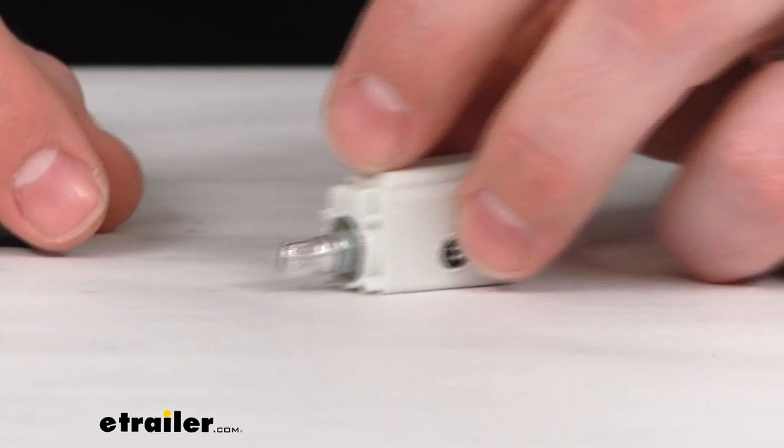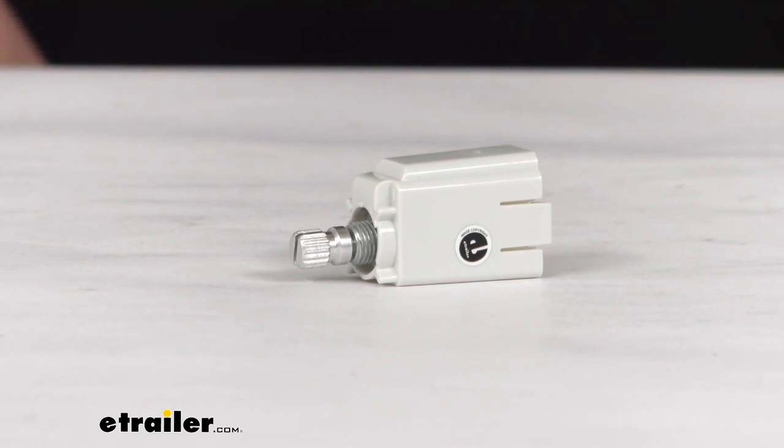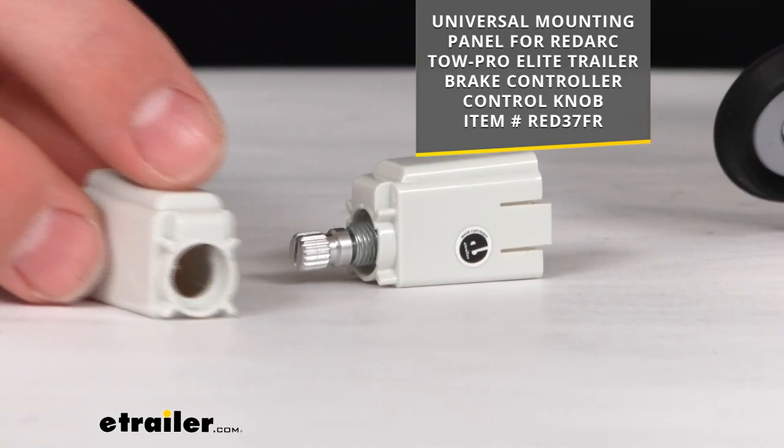The front dial will still attach the same. Everything will be the same. It'll just be the dashboard thickness that will be different. Now there is a separate kit that you could potentially get. It's going to have the exact same mounting panel.